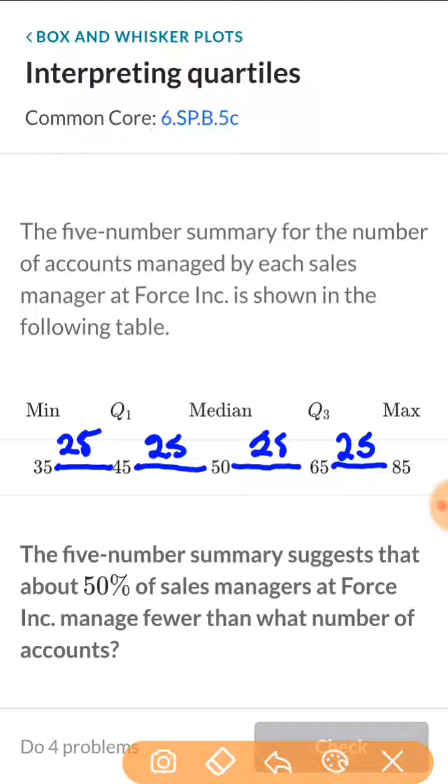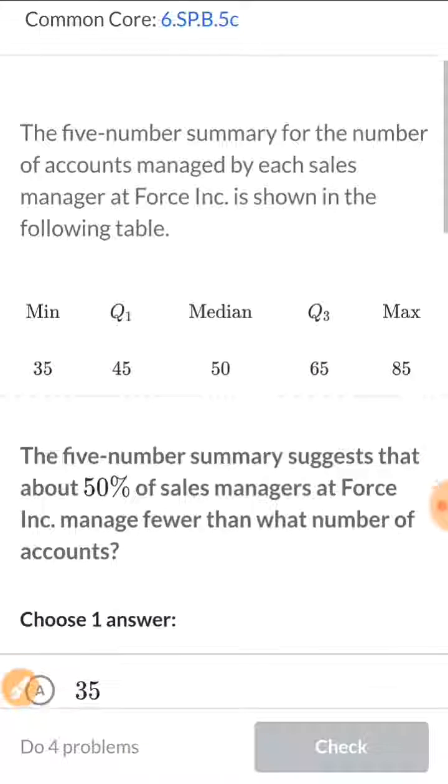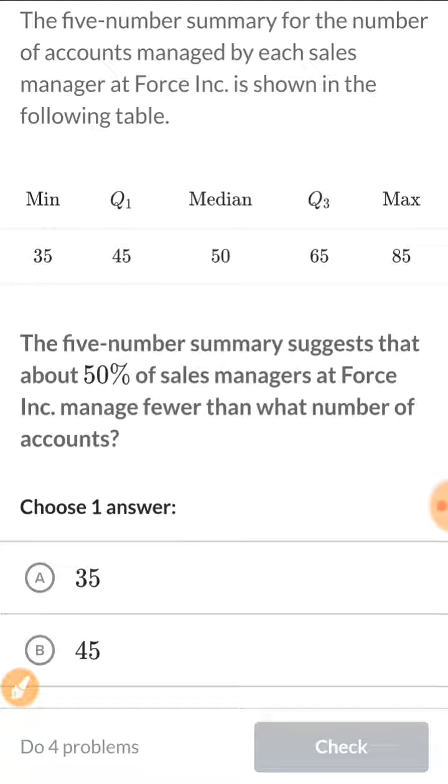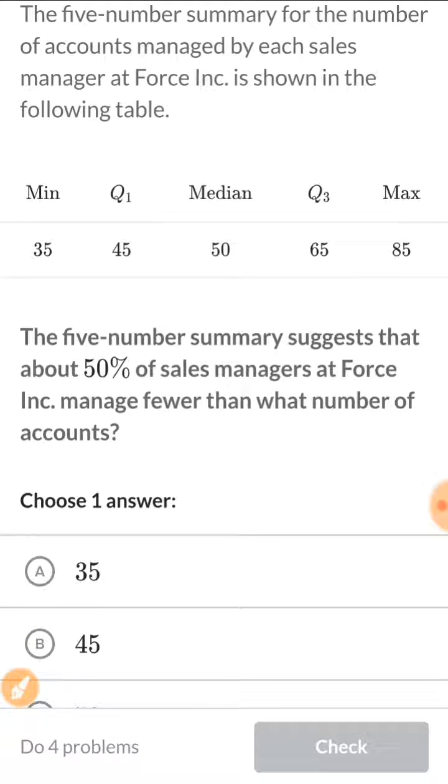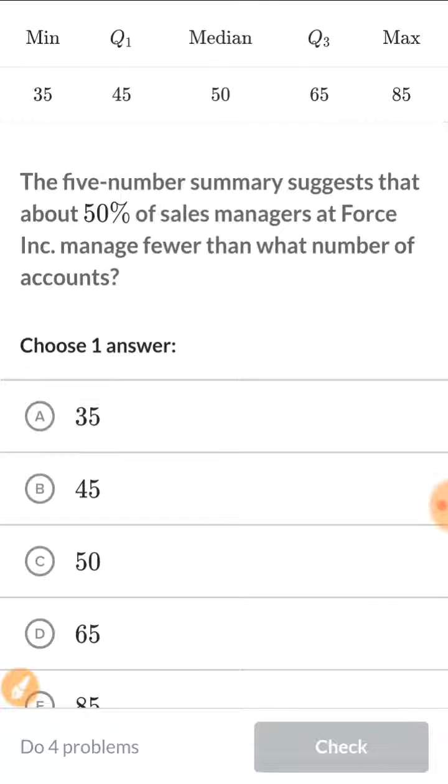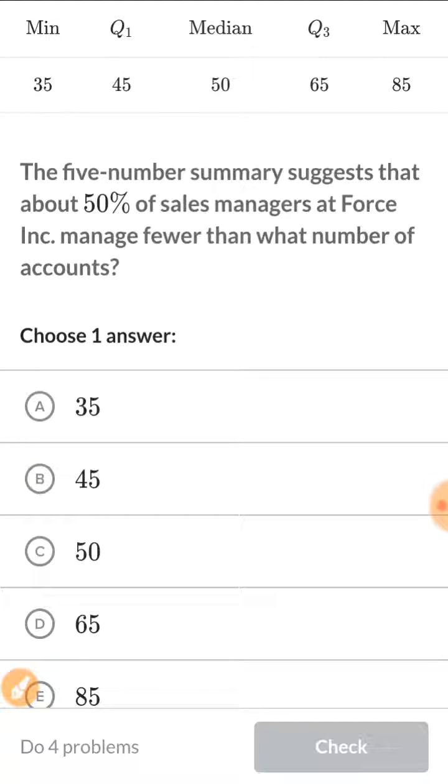So now that we understand that, we can look and begin to answer questions based on this understanding. It doesn't matter how much data is there. We know 25% of your data lies between each of these regions. So the question says, the five-number summary suggests that about 50% of Salesforce managers at Force Incorporated manage fewer than what number of accounts. So when you're doing this, essentially all you're doing is reading the table based on the understanding that each separation or each region is 25%.